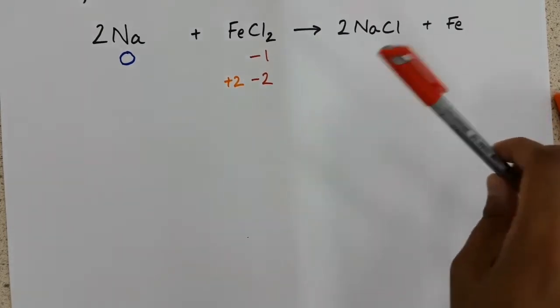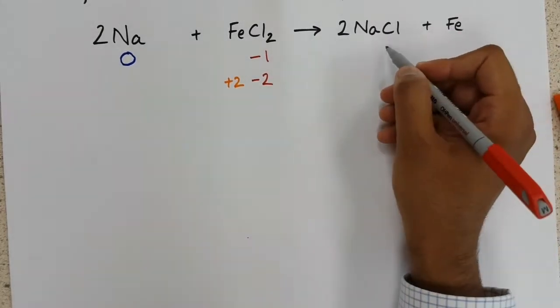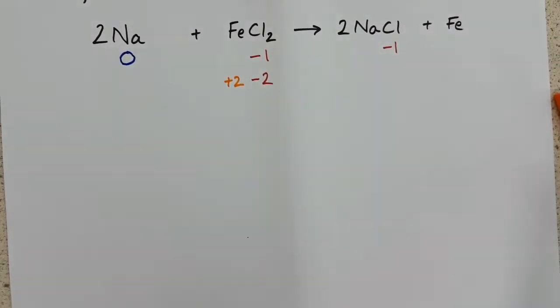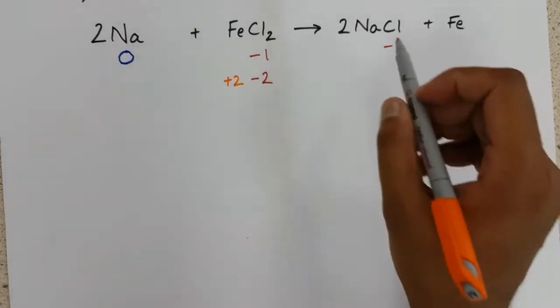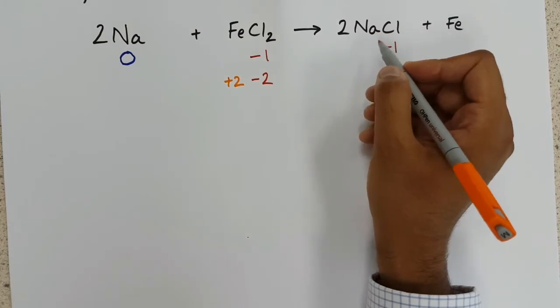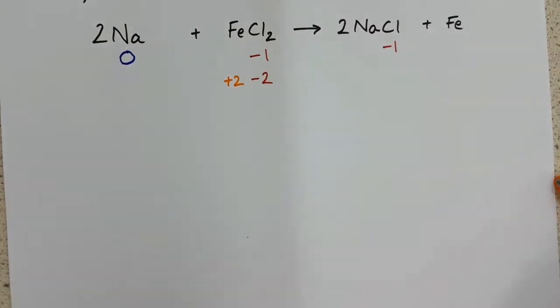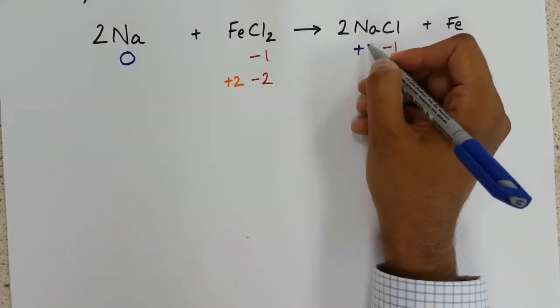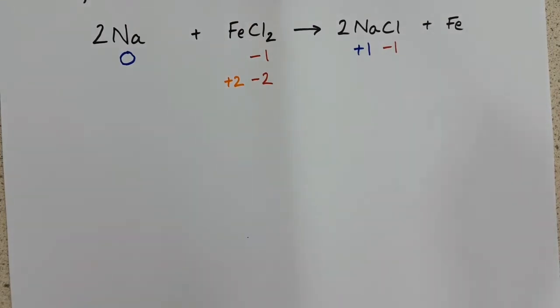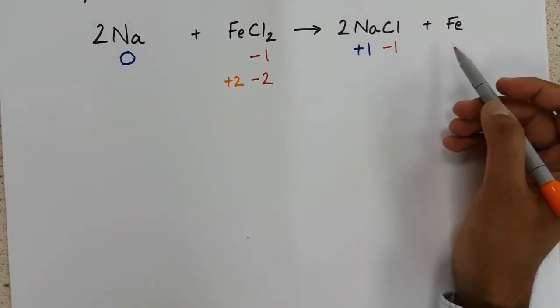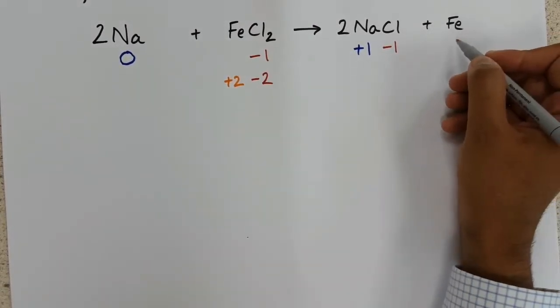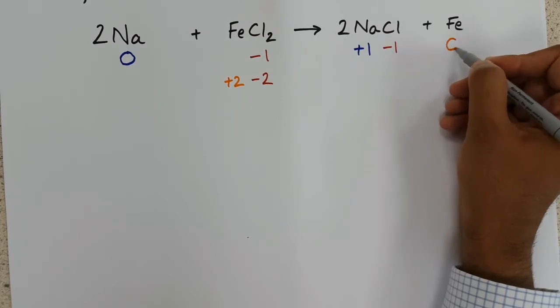Going across to our products, we have minus 1 for chlorine, as it's in group 7. Sodium is in group 1 and is now combined, therefore we change that to plus 1. And we now have iron, which is uncombined, therefore has an oxidation state of 0.